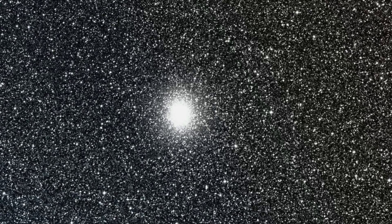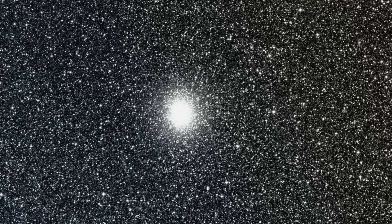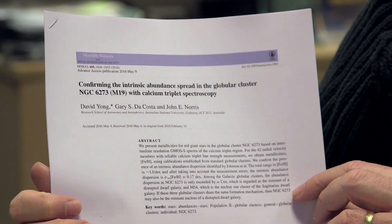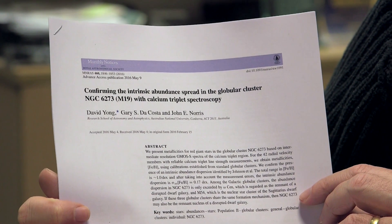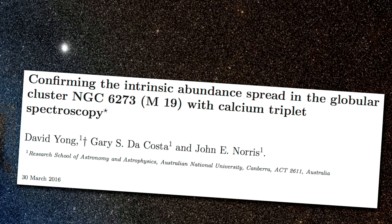So you want to know why it's this shape? Let's creep up on it slowly. Let me refer to a paper: "Confirming the intrinsic abundance spread in the globular cluster M19 with calcium triplet spectroscopy."